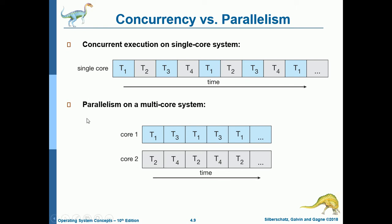What about parallelism on multi-core? Parallelism applies to multi-core systems. For example, with core 1 and core 2, all threads of process P0 are assigned to core 1, and all threads of process P1 are assigned to core 2. They all execute at the same time. Compared with concurrency, which is alternate execution between threads of P0 and P1, that is the difference between concurrency and parallelism.